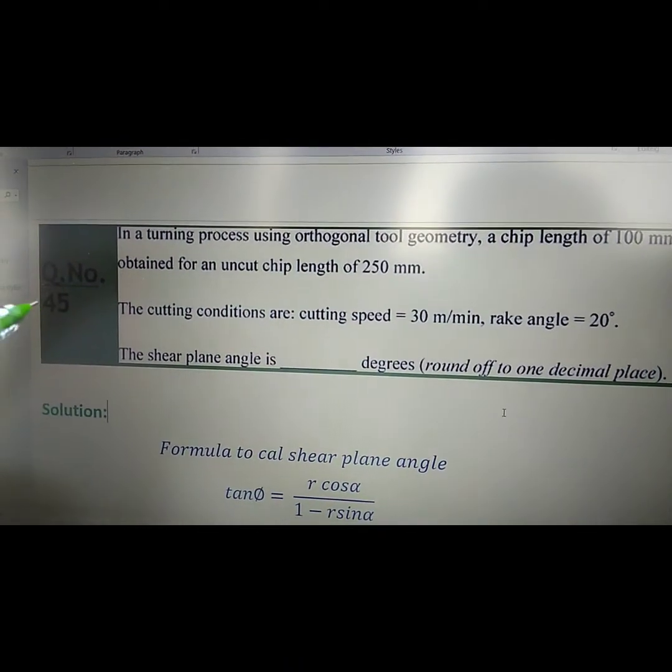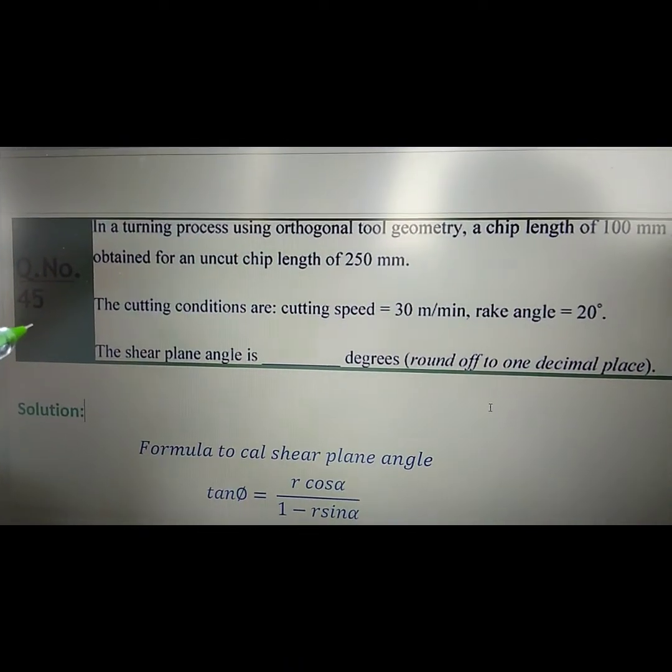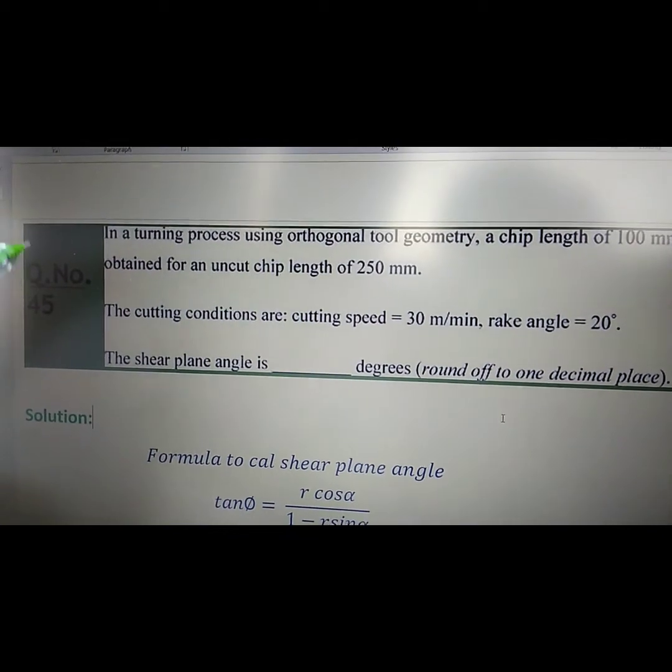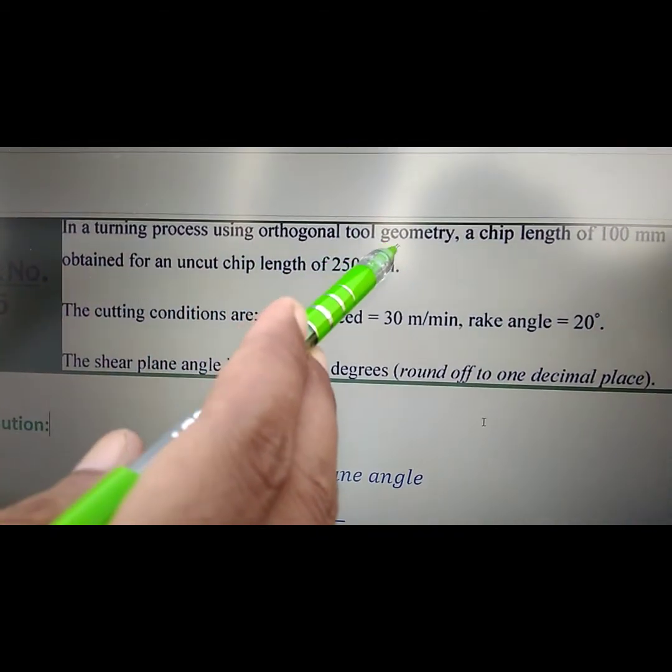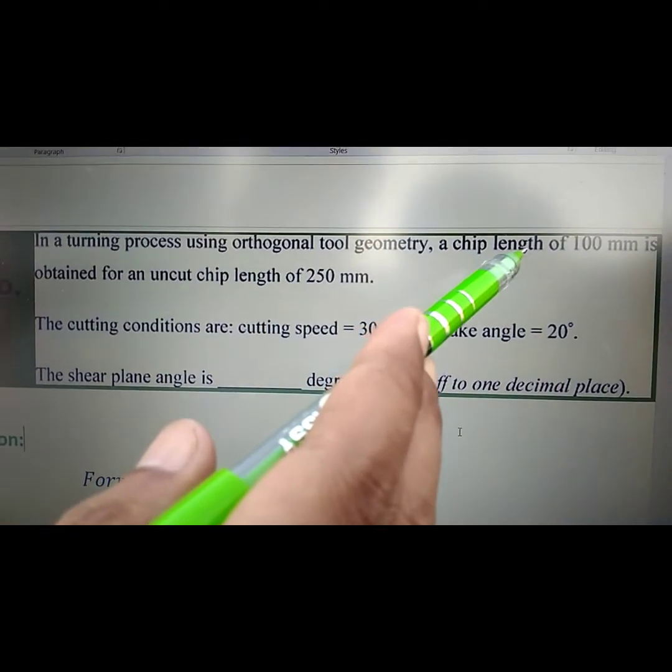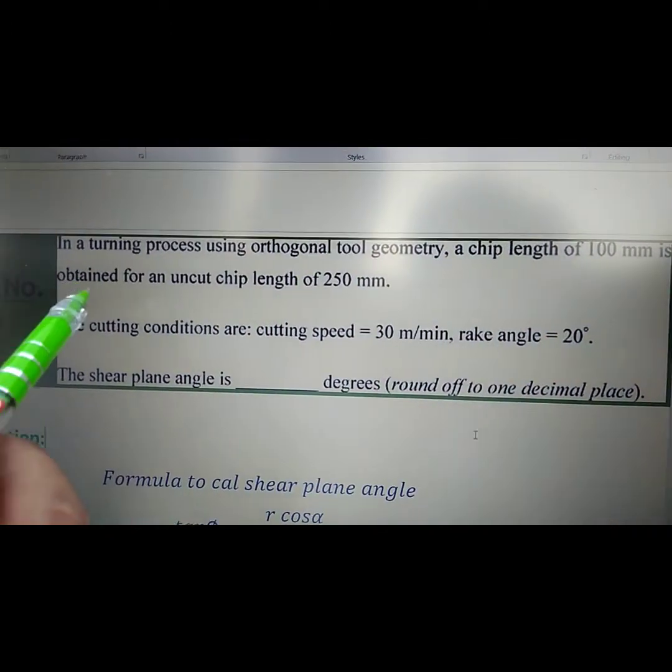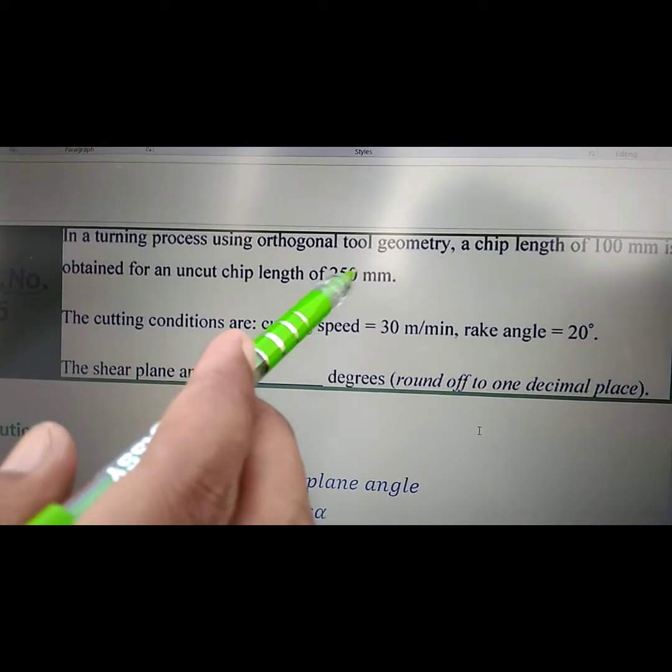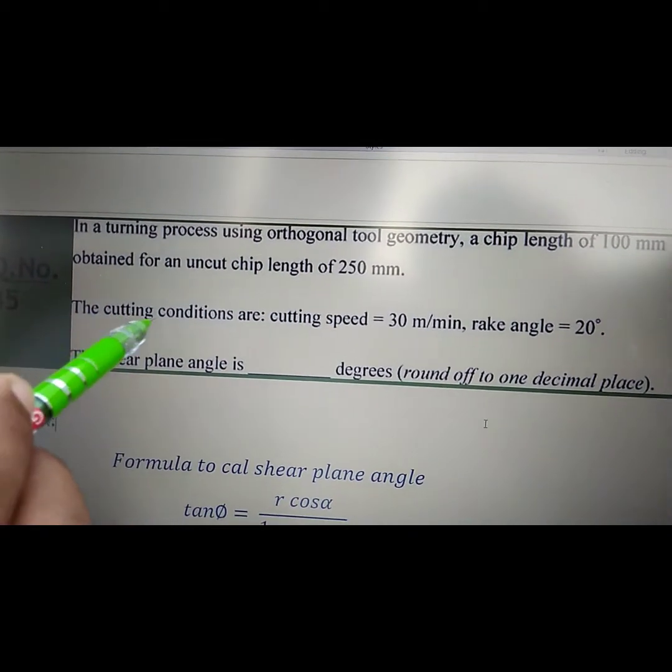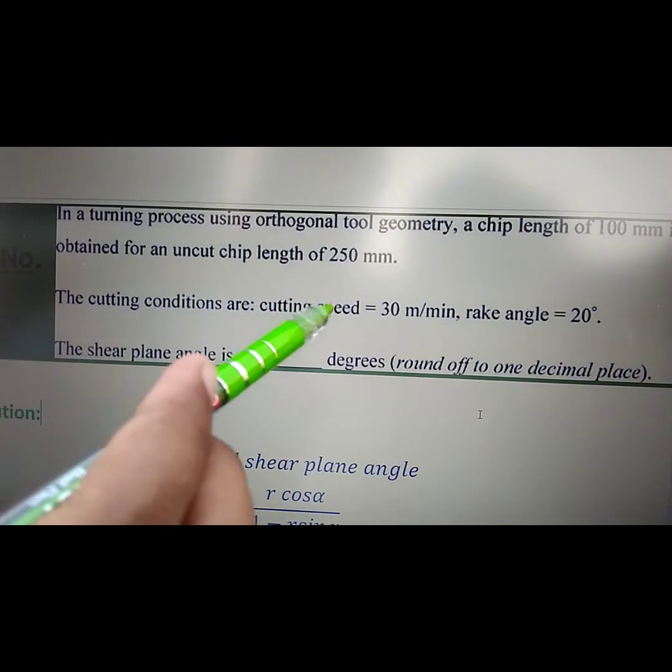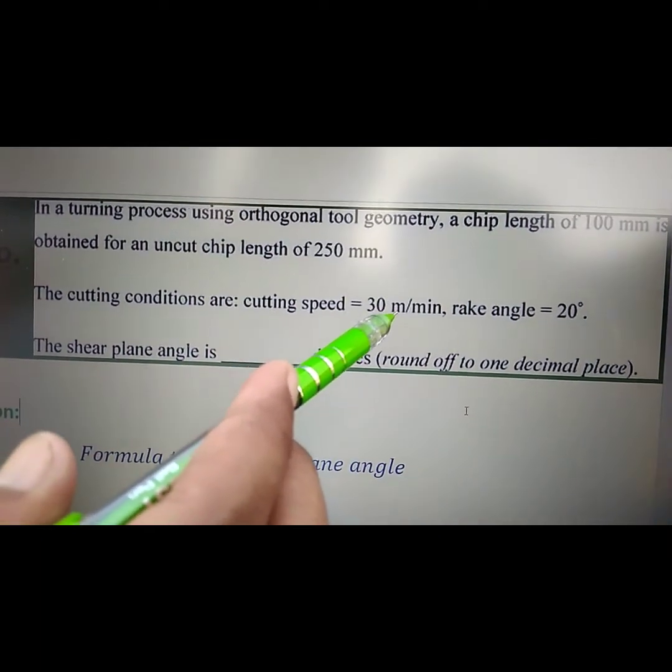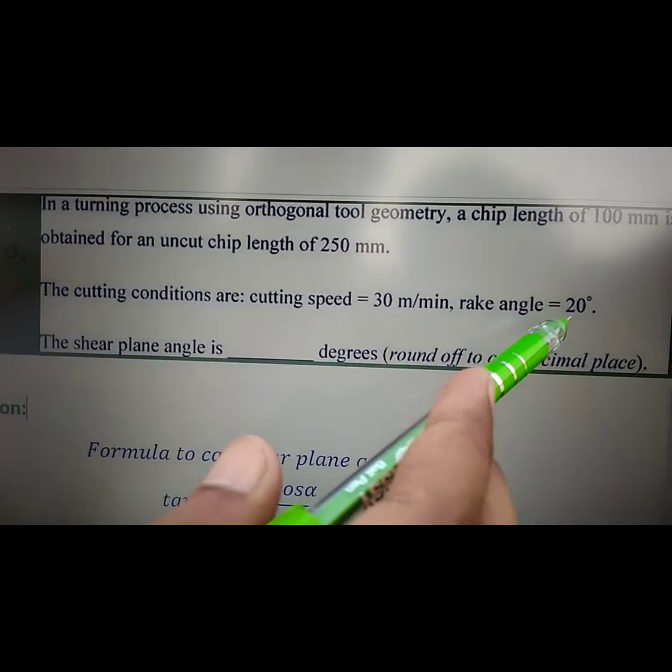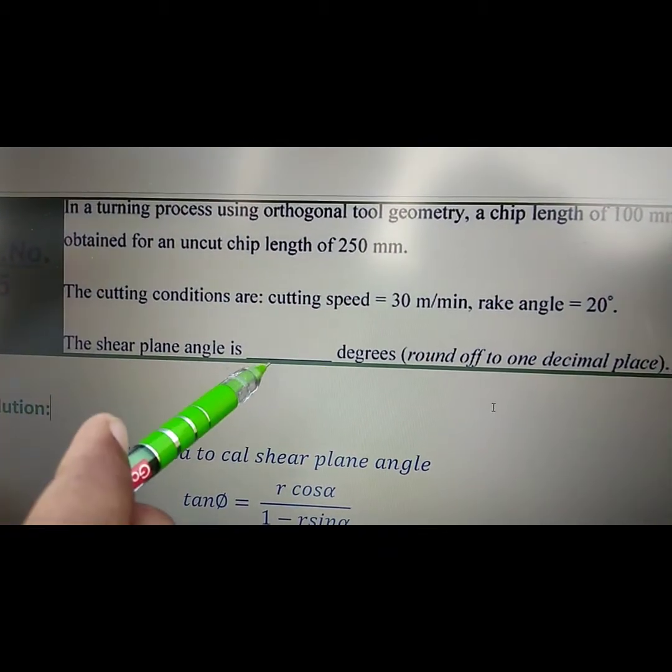This question is from the production subject. In a turning process using orthogonal tool geometry, a chip length of 100 mm is obtained from an uncut chip length of 250 mm. The cutting conditions are: cutting speed equals 30 m/min, rake angle equals 20°.